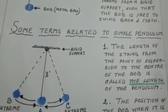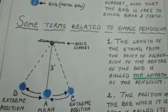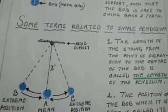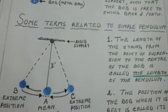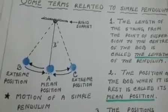The length of the string or thread from the point of suspension to the center of the bob is called the length of the pendulum. In the figure at the left hand side, small l is the length of the pendulum.